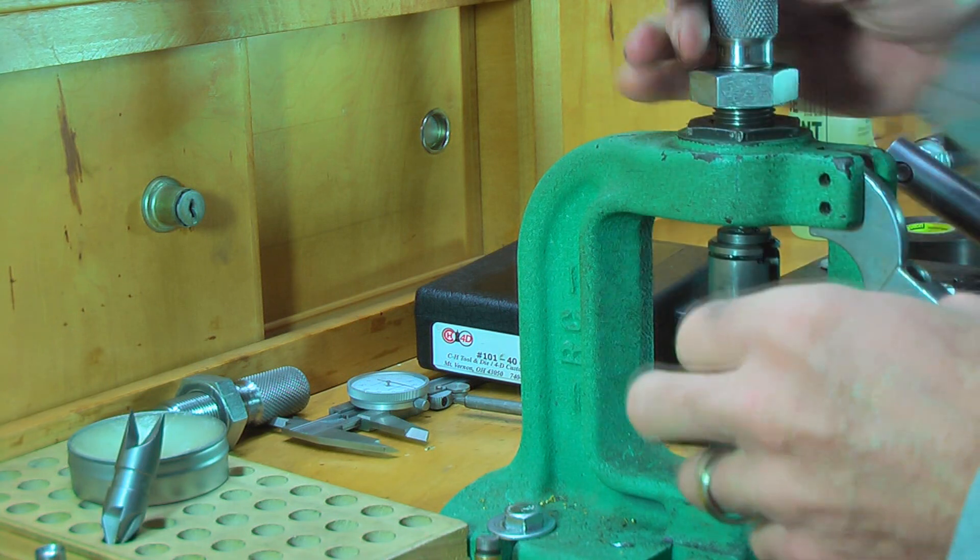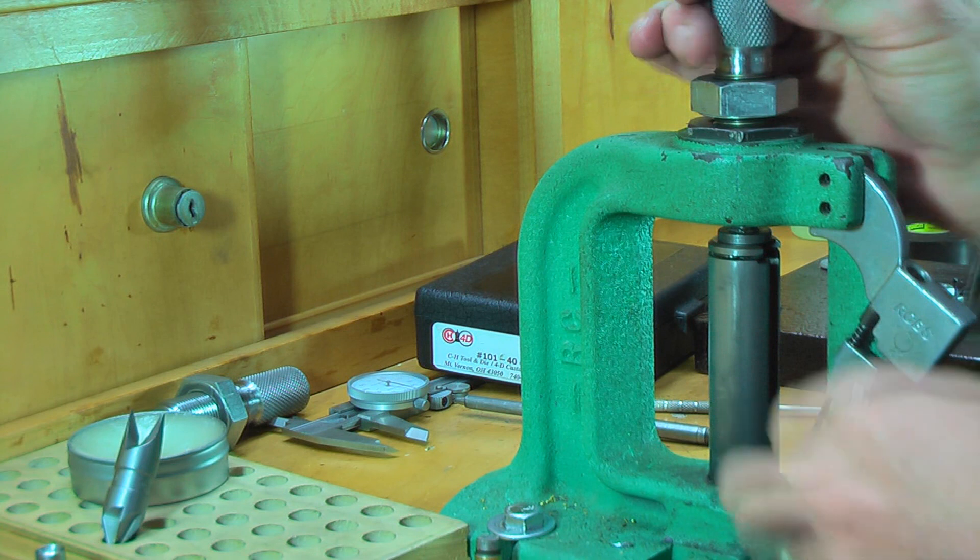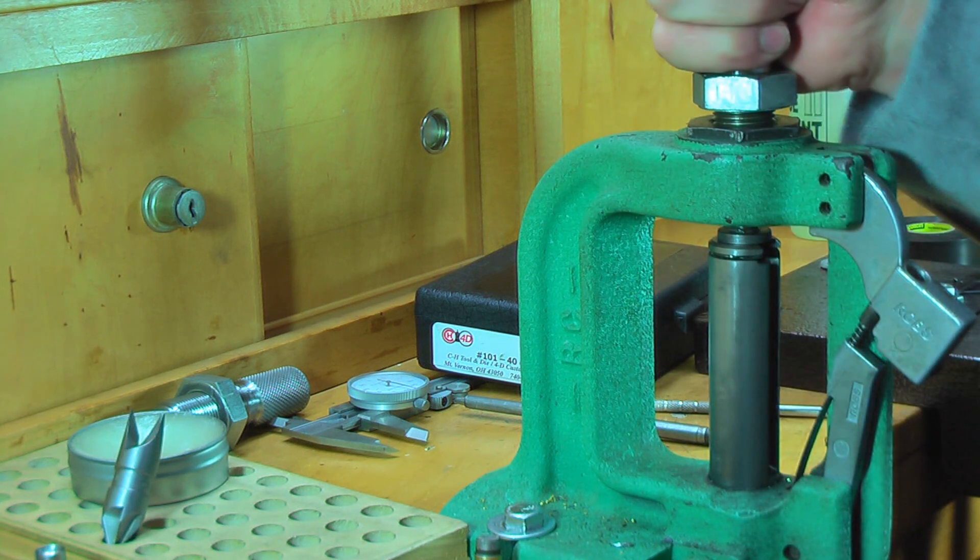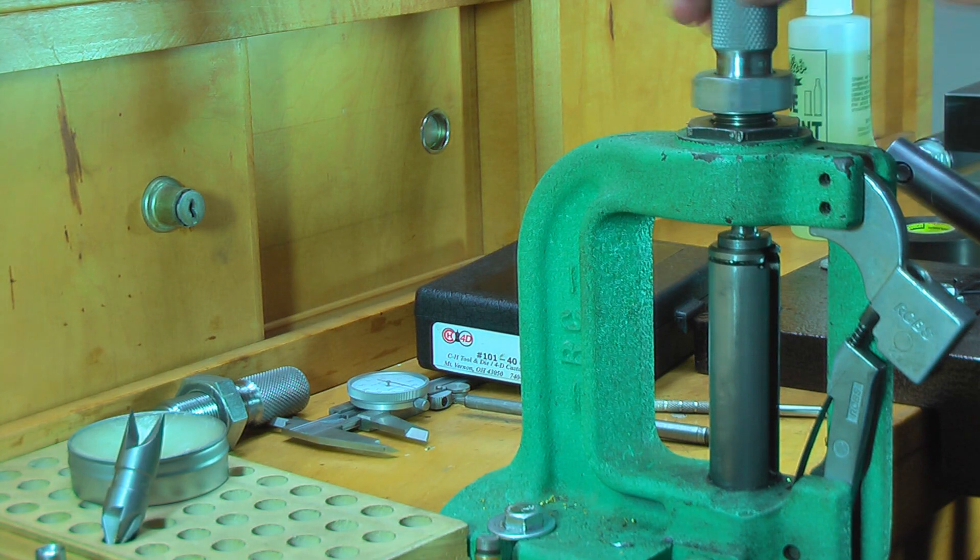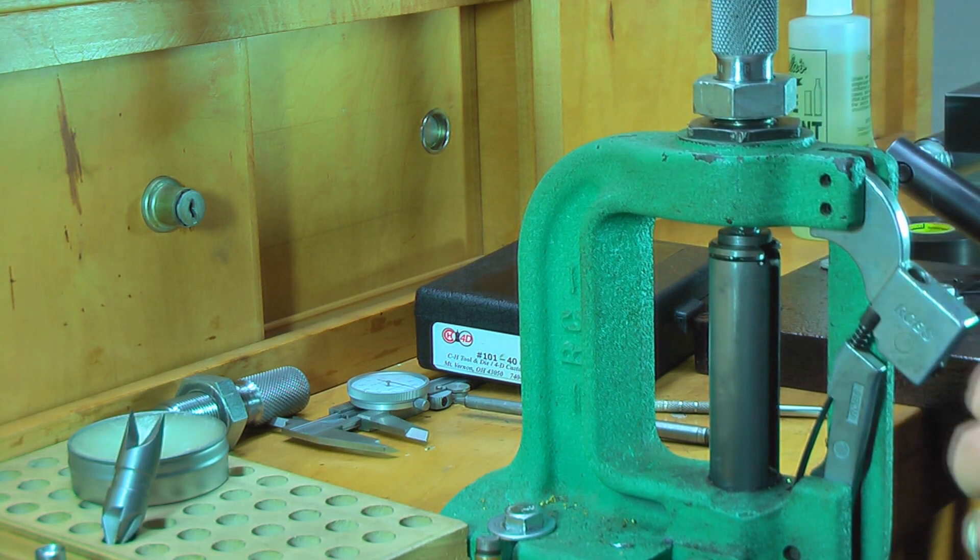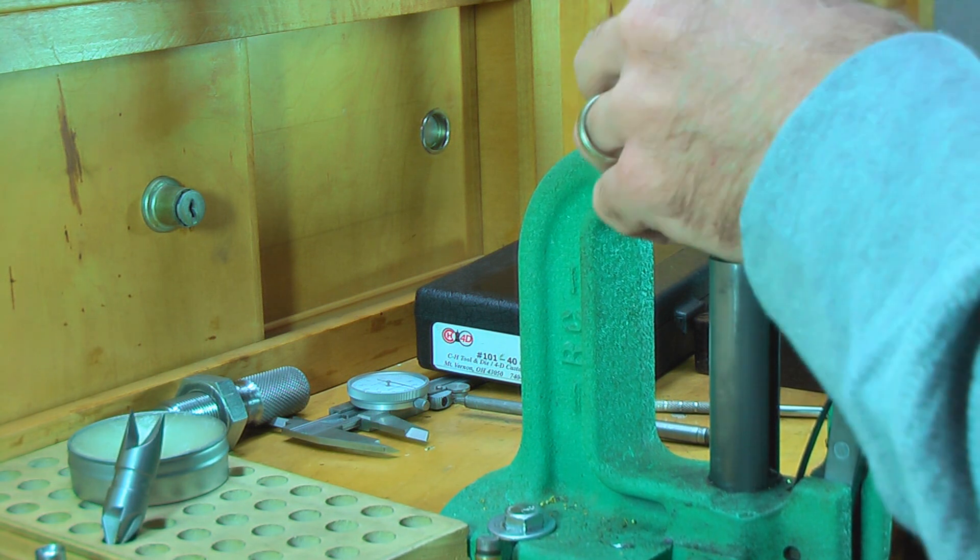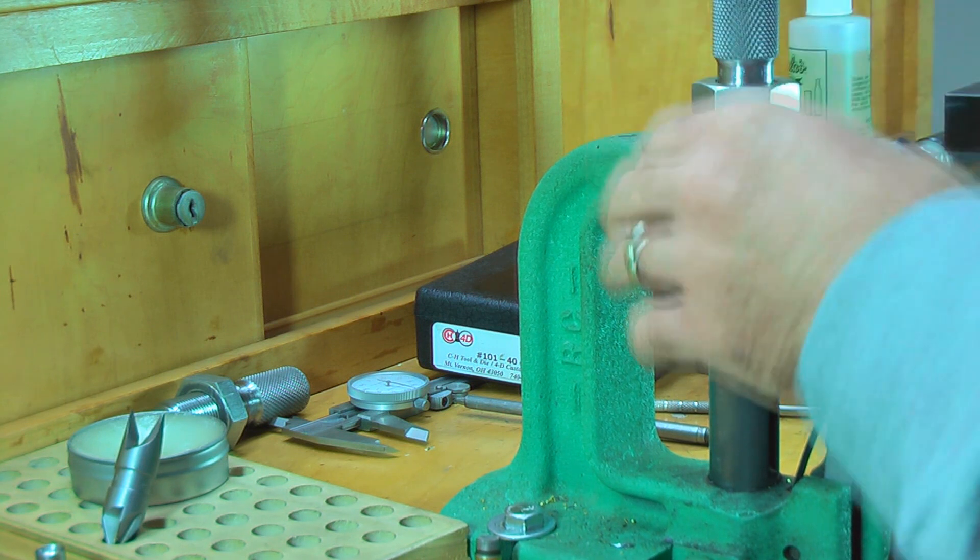We feel good resistance. We're going to run it down until it stops. It's going to be kind of hard to turn. Now we need to expand the core and seat it. You're going to keep turning this a quarter to an eighth of a turn until you feel the same cam over. And it's going to have to cam over pretty hard.